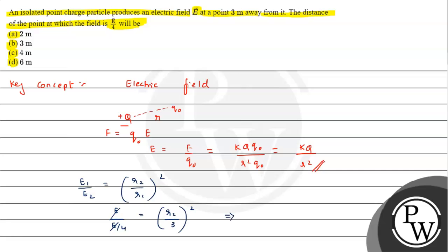So from here we can say 4 will be equal to r2 upon 3 the whole square. Therefore, r2 gives a value of about 6 meters. So this is the answer to the question which matches option d. I hope you understood the solution. All the best.